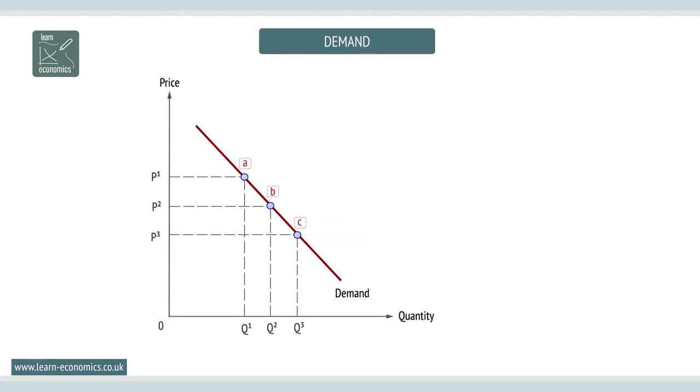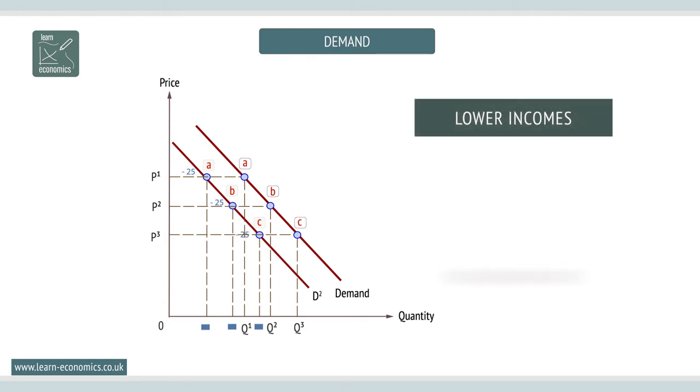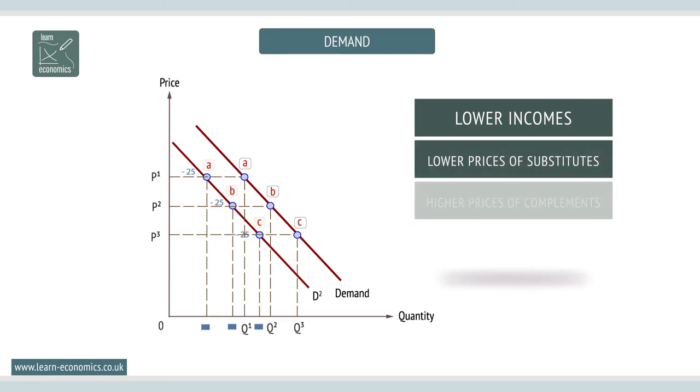A shift to the left is a decrease. Fewer goods are demanded at all prices. Possible factors causing this include lower incomes, assuming a normal good, a fall in price of a substitute, an increase in the price of a complement, and changes in tastes and preferences.